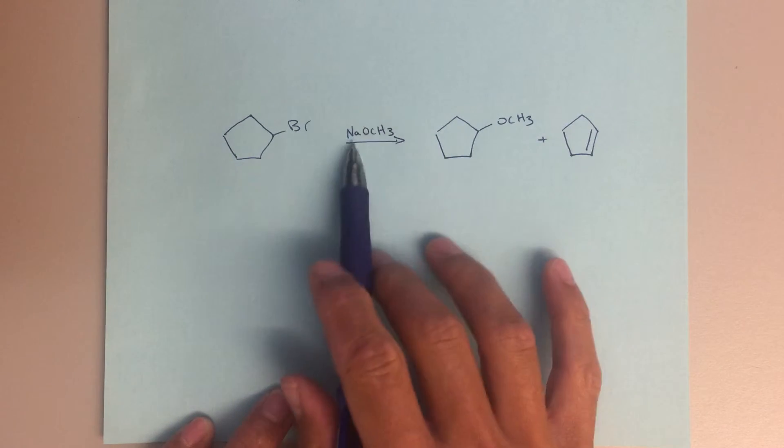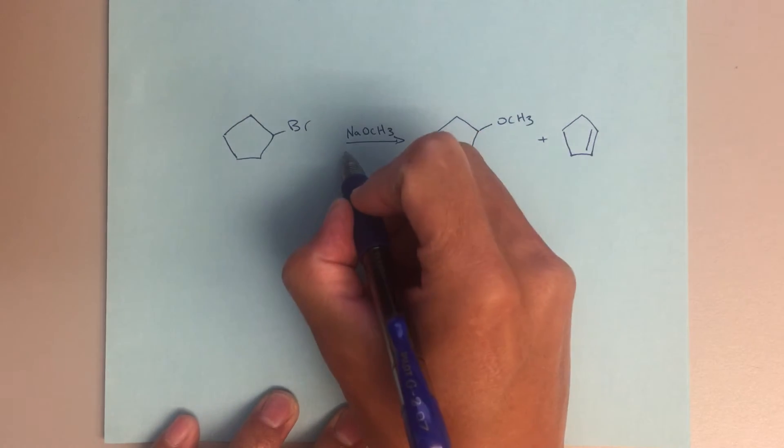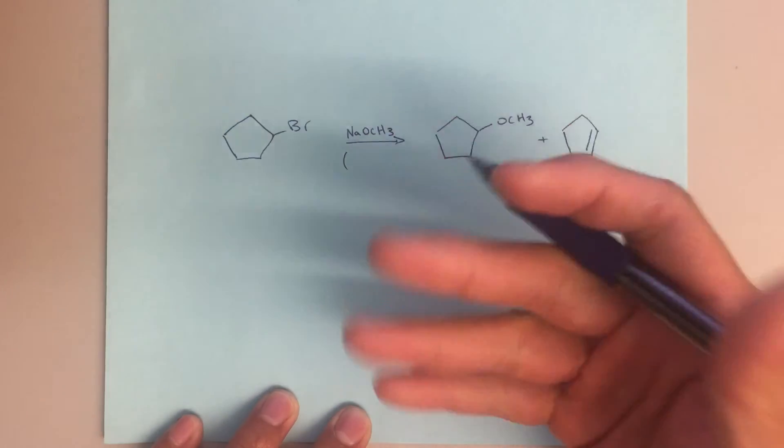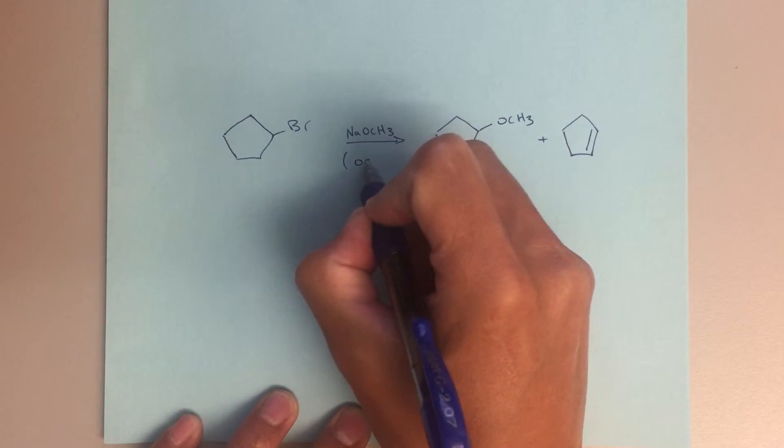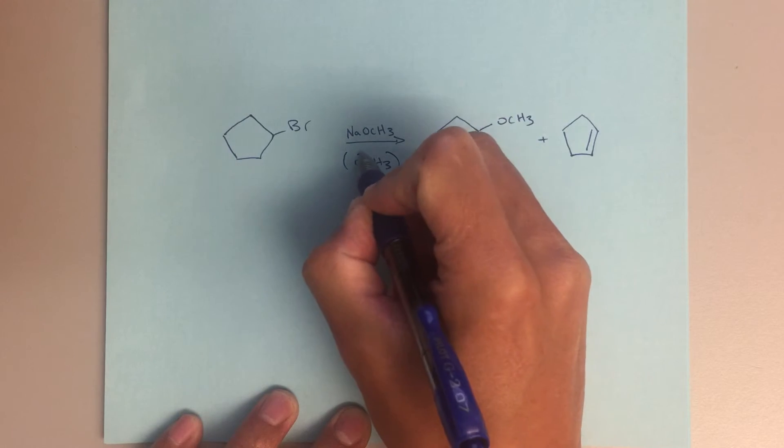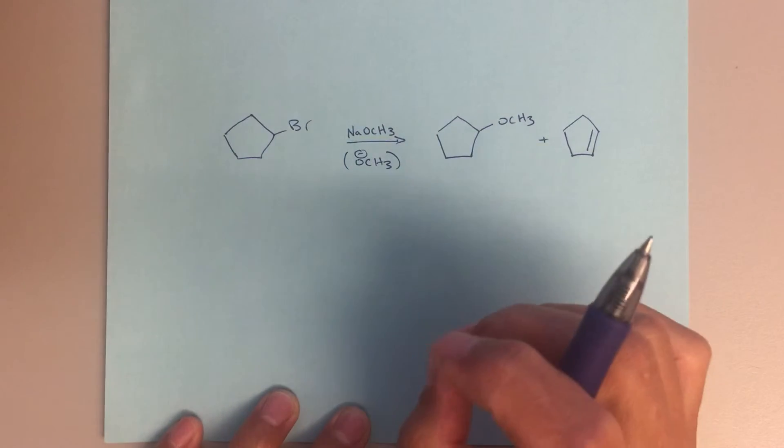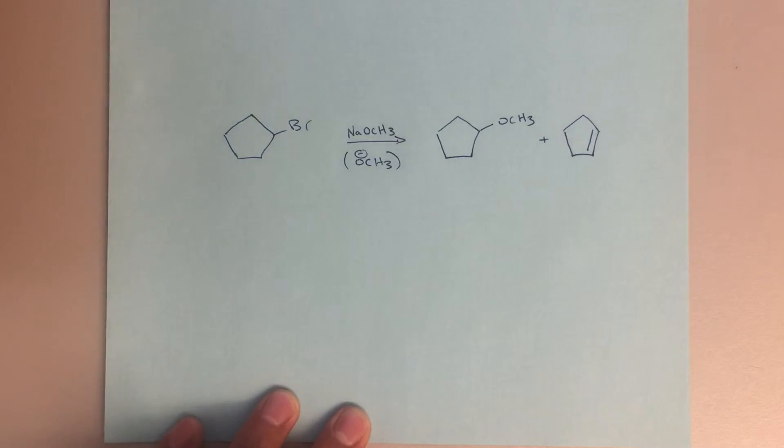Since I'm seeing the sodium methoxide, right away, again, I'm going to say, well, what does this represent? What does this mean? What's going to be doing this chemistry when I'm looking at that? I'm going to think to myself, OCH3 minus. That methoxide ion, that's what's going to be driving this reaction.